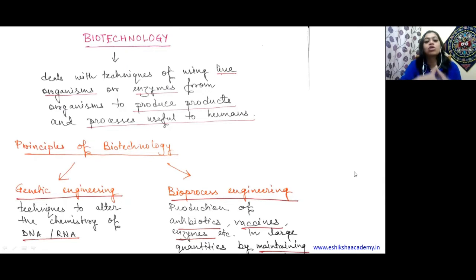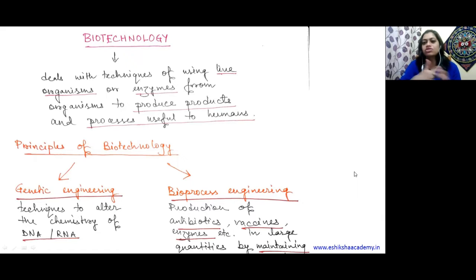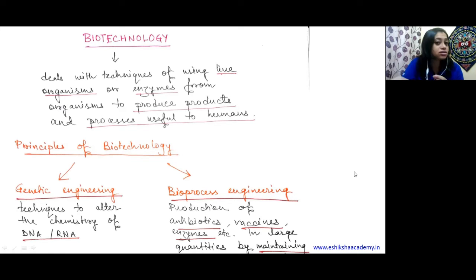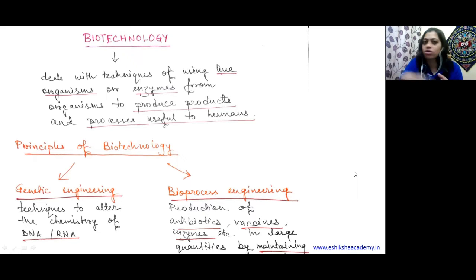So replication, transcription, and translation are all part of the central dogma studied in Chapter 6. In genetic engineering, there are techniques to alter the chemistry of DNA or RNA. We can alter where the gene information is written in the DNA, or alter the RNA formed after transcription, and automatically the translation will also be altered. This is called genetic engineering.